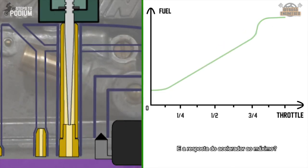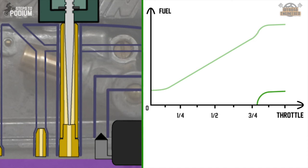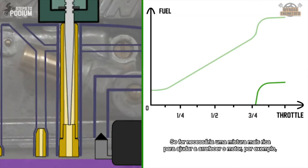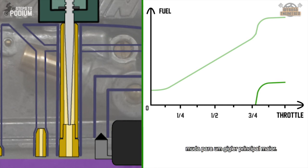And what about full throttle? If you need a leaner mixture on full throttle to avoid foul plugs, change to a smaller main jet. If you need a richer mixture to have a cooler engine at full throttle, for example, change to a bigger main jet.